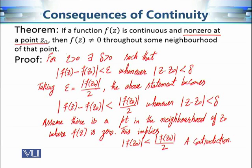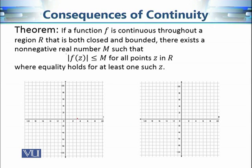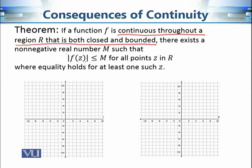The proof is very simple but the consequences are important. It is basically saying that some behaviors of a continuous function will change very continuously. The next consequence of continuity of a complex valued function says: if we have a continuous function throughout a region R that is both closed and bounded, then there exists a non-negative real number M such that the modulus |f(z)| is always less than or equal to M.